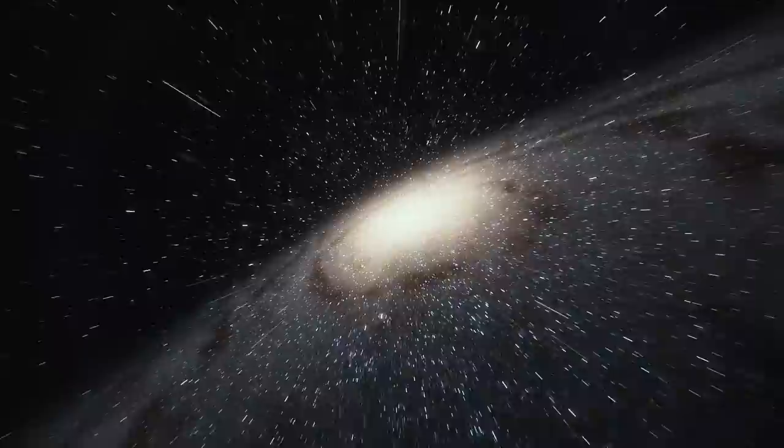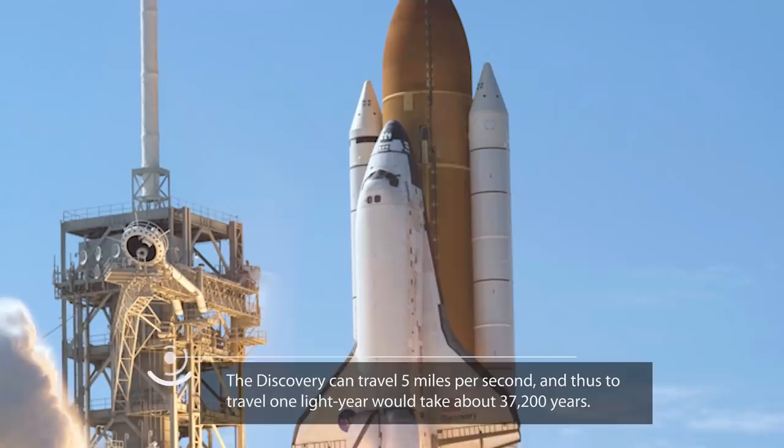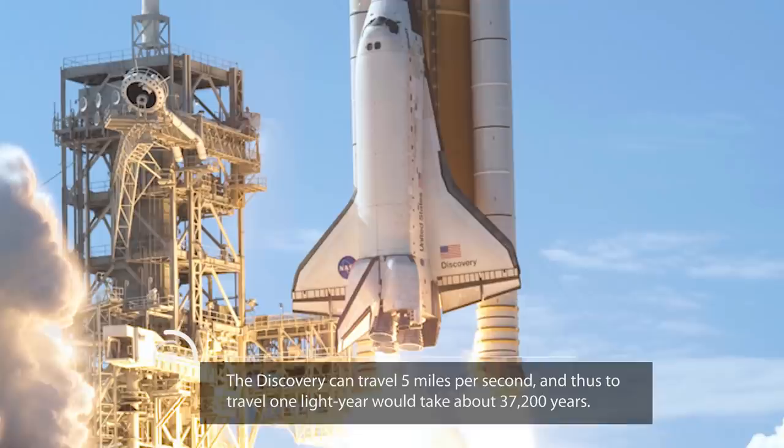For context, if we used the space shuttle Discovery to try and get there, it would take an unfeasibly long time to arrive at Kepler-160. We say this because the Discovery can travel 5 miles per second, and thus to travel one light year would take about 37,200 years. Now times that by 3000, and you see the immediate problem here.